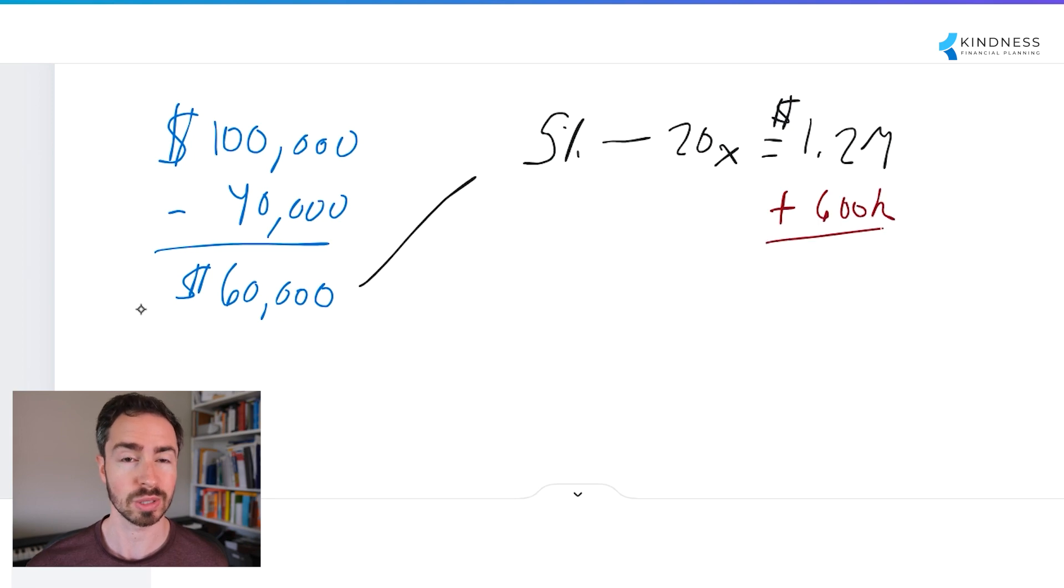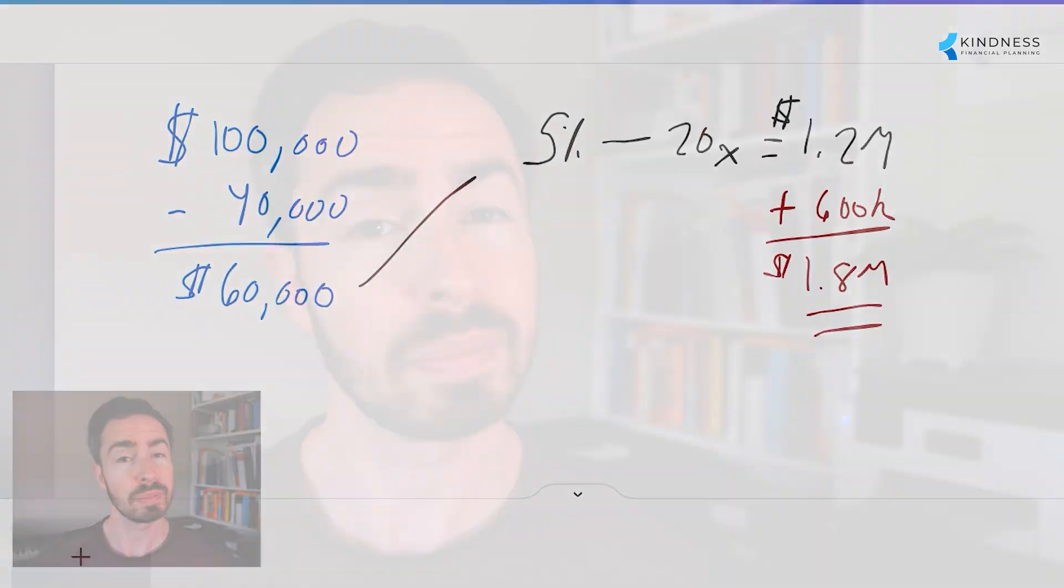And then if we take the $600,000 from earlier, it's $1.8 million that we need. You can see how depending on the withdrawal rate you use, you're going to need more or less saved. And it comes down to a comfort level, how you're going to be invested. There's a lot that goes into that. So I'd recommend doing some research around that to getting comfortable with the withdrawal rate.